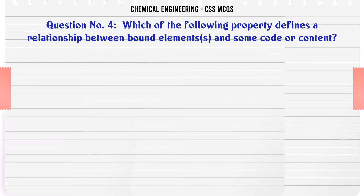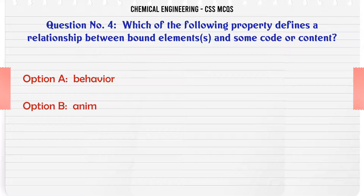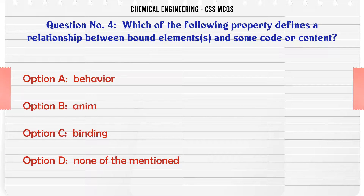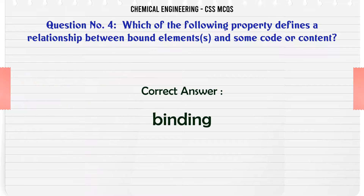Which of the following property defines a relationship between bound elements and some code or content? A. Behavior. B. A name. C. Binding. D. None of the mentioned. The correct answer is: Binding.